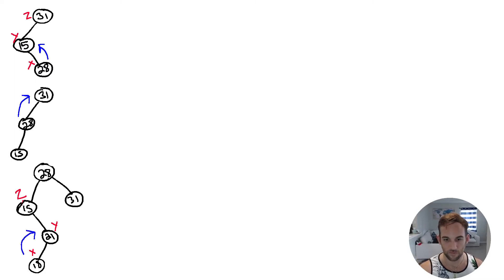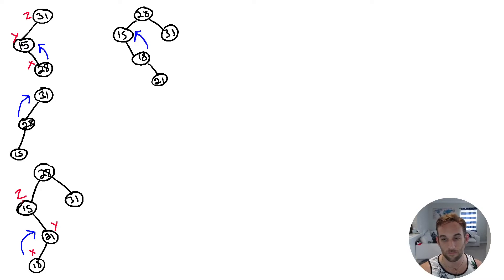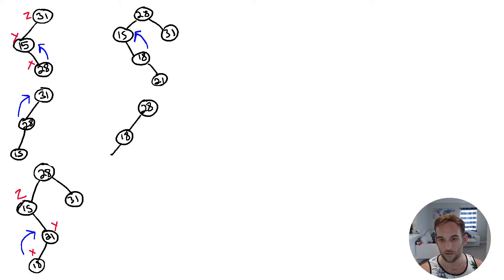We're going to bring X to where Y is. So this is going to look like: 28 at the top, 31 to the right, 15 to the left, 18 as right child of 15, and 21 as right child of 18. Then the next rotation: we bring 18 up to where 15 is — that's the single left rotation. So now it looks like 28 at the root, 18 to the left with children 15 and 21, and 31 to the right.